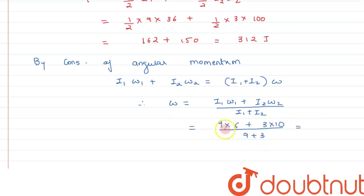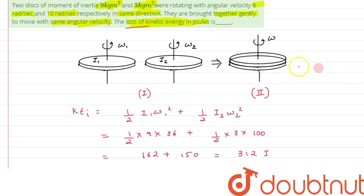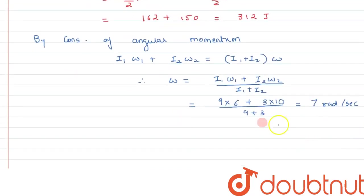This comes out to be 54 plus 30, 84 by 12 that is 7. So 7 radian per second is the angular velocity when both the discs are combined or connected together.